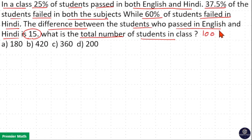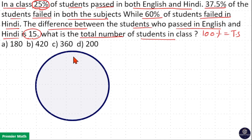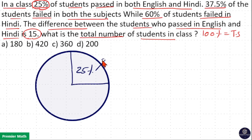Consider 100% as the total number of students. When you draw the Venn diagram, consider the circle as 100%, which is equal to the total number of students. The question says 25% of students passed in both subjects, so 25% — that is one-fourth of this diagram — represents students who passed in both English and Hindi.